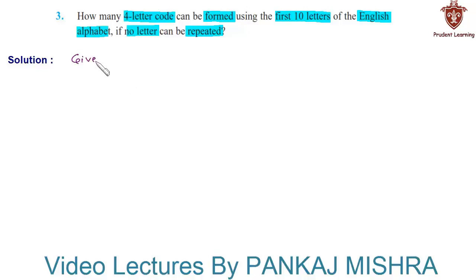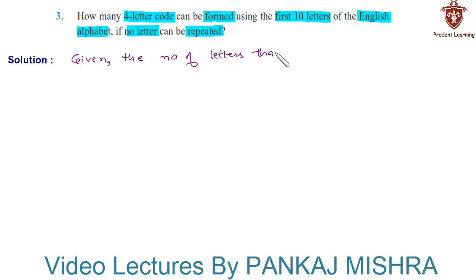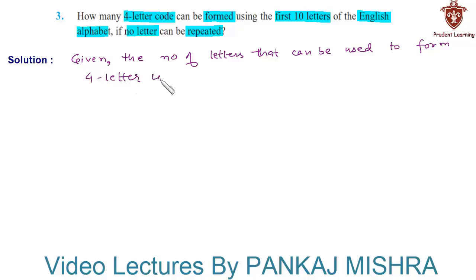In this question, we are given that the number of letters that can be used to form a 4-letter code is 10, that is the first 10 letters of the English alphabet.